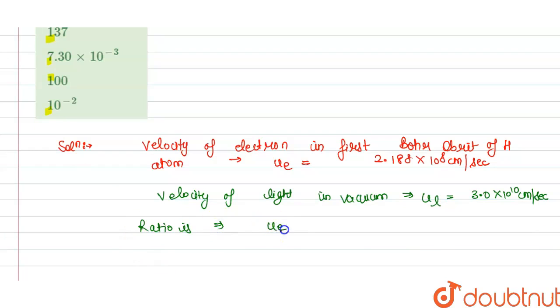we have to divide U_E by U_L, that is velocity of electron divided by velocity of light, so this is 2.188 × 10^8 divided by 3.0 × 10^10, so this is 7.0 × 10^-3.